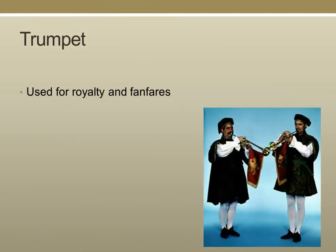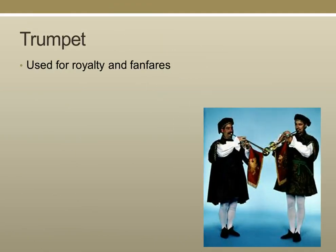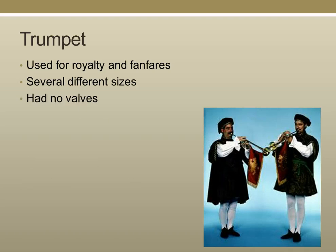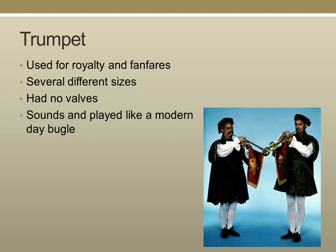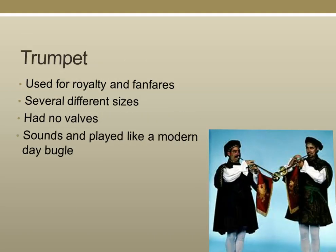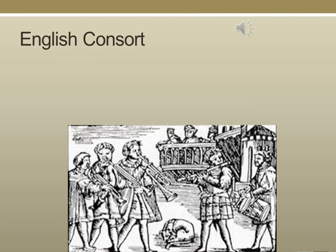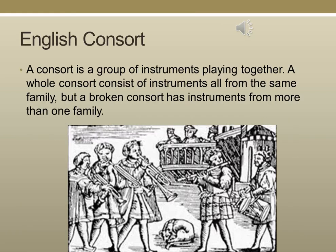The trumpet was used for royalty and fanfares. It came in several different sizes because it didn't have valves — the sounds are played like a modern-day bugle. A consort is a group of instruments playing together. A whole consort consists of instruments all from the same family, but a broken consort has instruments from more than one family. Here's an actual recorder consort as an example.